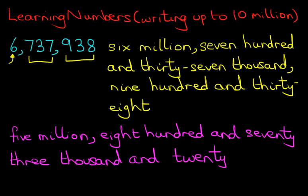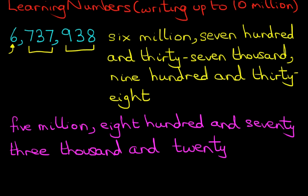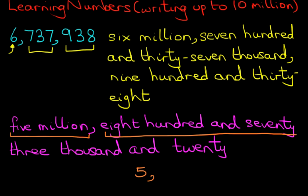Now let's read this. It is 5,873,020. So how do we write that in numerals? Well, let's start at the beginning — we've got 5,000,000, let's put a comma, then we've got 873,000.